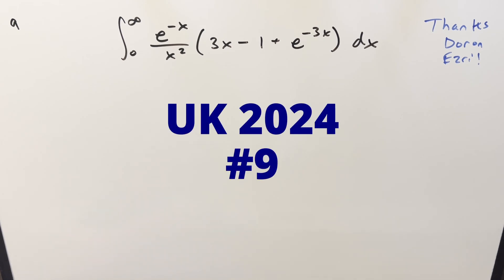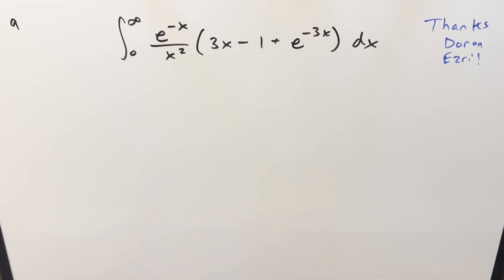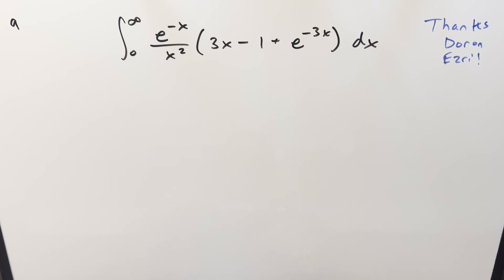We have a good one here today from the UK Integration Bee 2024, problem nine: the integral from zero to infinity of e^(-x) over x² times (3x - 1 + e^(-3x)) dx. This is actually really similar to another problem from the same Integration Bee I did just a little while ago. I did consider skipping it, but there was an interesting suggestion in the comments from Duran Esri that we could do this whole thing using Laplace transforms.